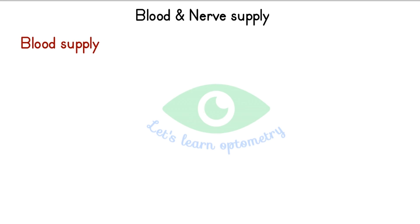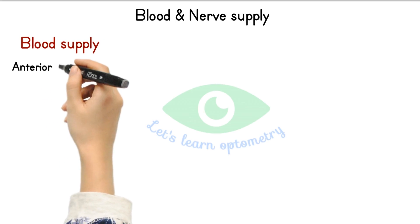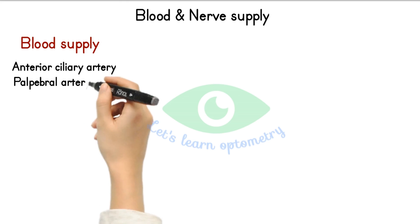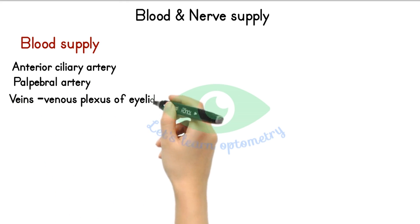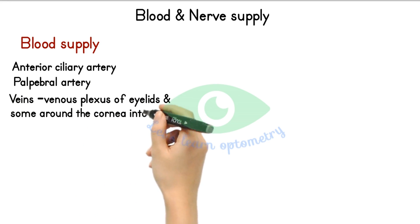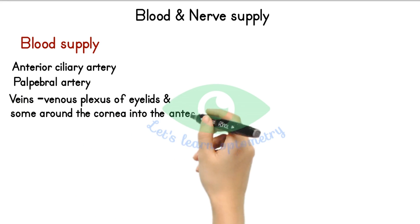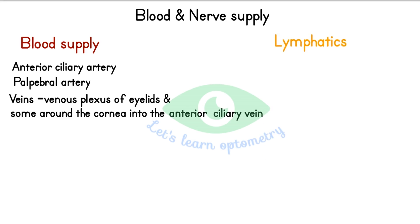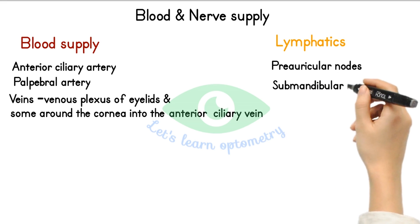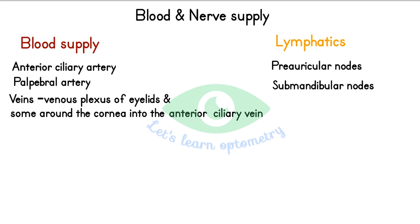Regarding blood supply, the conjunctiva is richly vascular, supplied by the anterior ciliary artery and the palpebral arteries. The veins from the conjunctiva drain into the venous plexus of the eyelids, and some around the cornea drain into the anterior ciliary veins. For lymphatic drainage, there is a dense lymphatic network which drains to the preauricular and submandibular lymph nodes, corresponding to that of the eyelids.